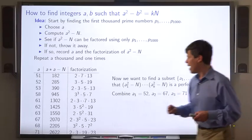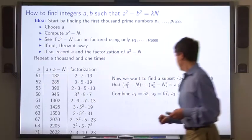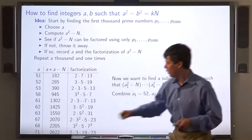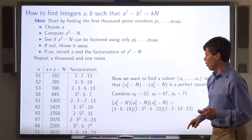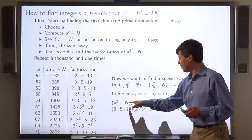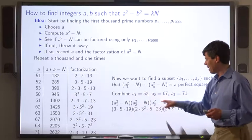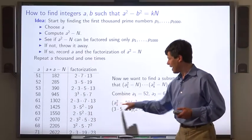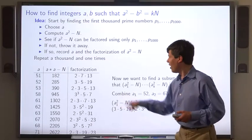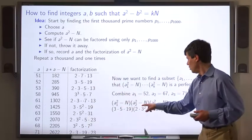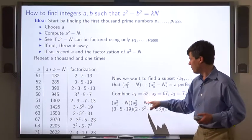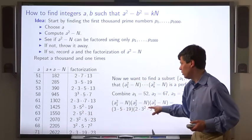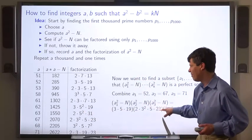So in this case, we can combine the numbers a1 equals 51, a2 equals 67 and a3 equals 71. So a1 squared minus n times a2 squared minus n times a3 squared minus n is, well we know the factorization of a1 squared minus n, it's 3 times 5 times 19. We know the factorization of a2 squared minus n, that's 2 times 3 squared times 5 times 23.